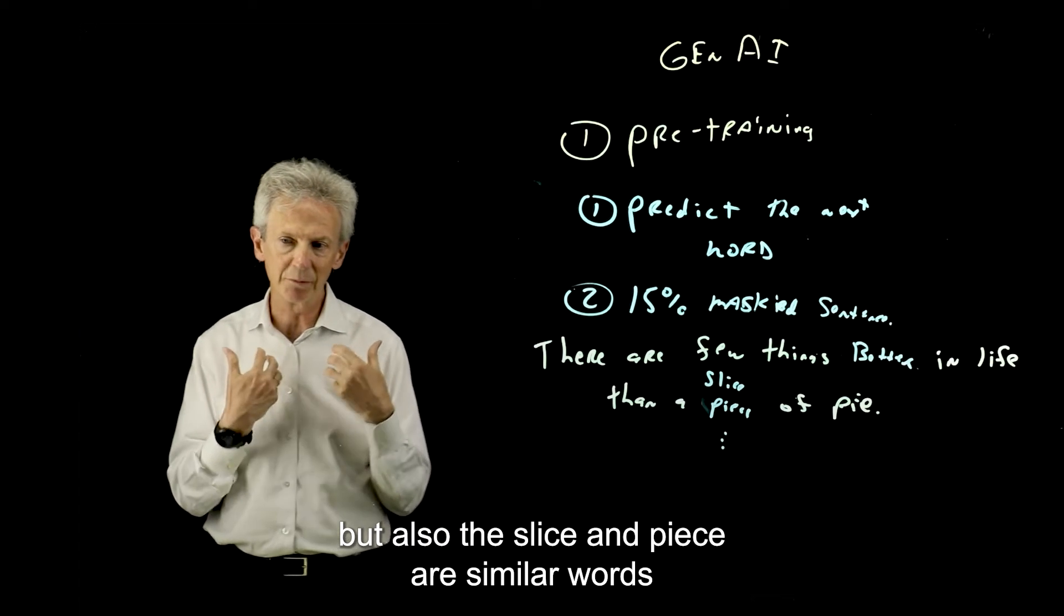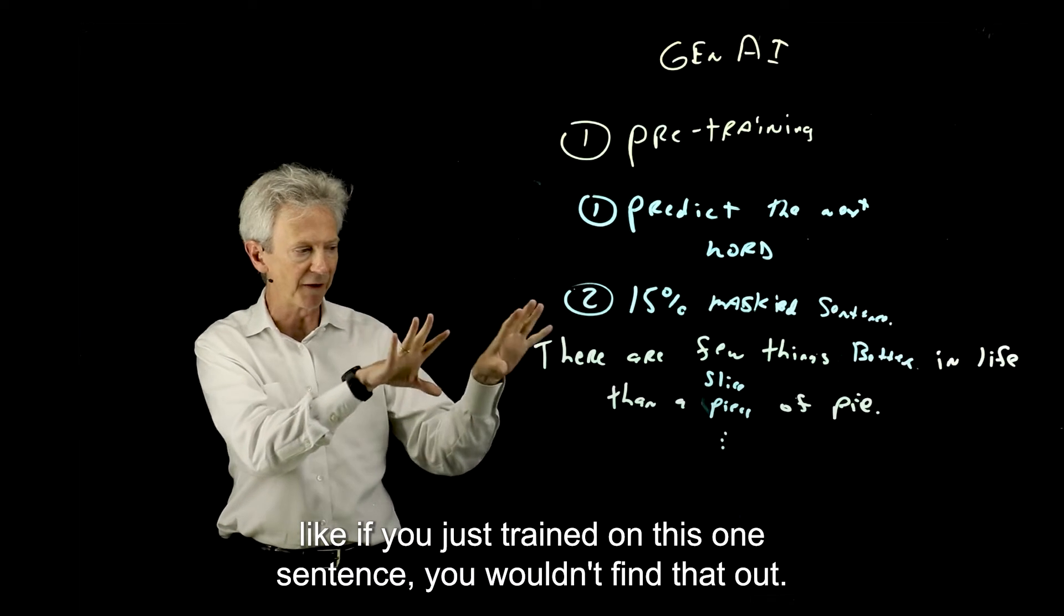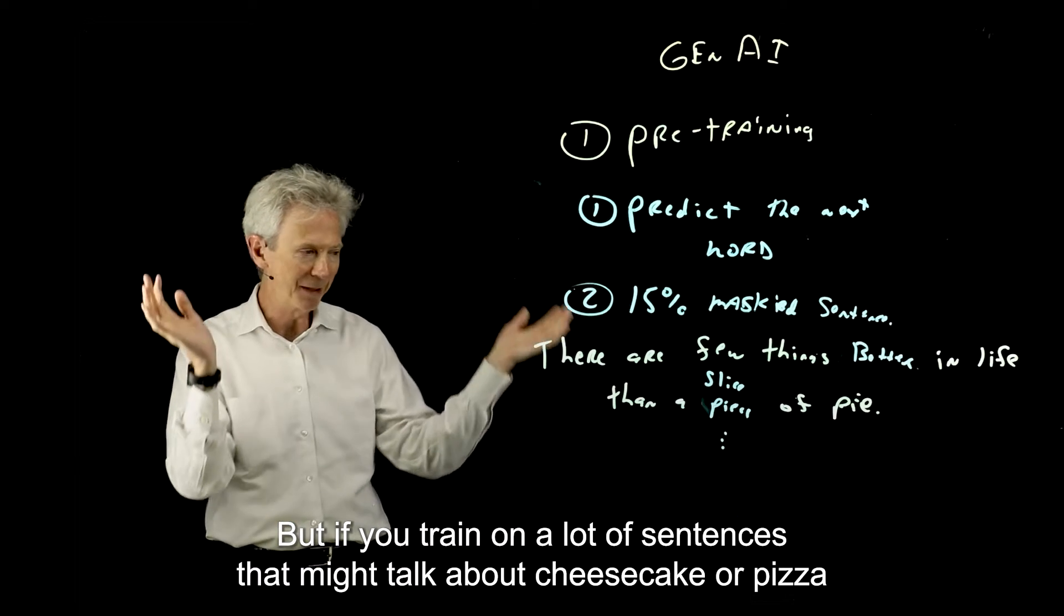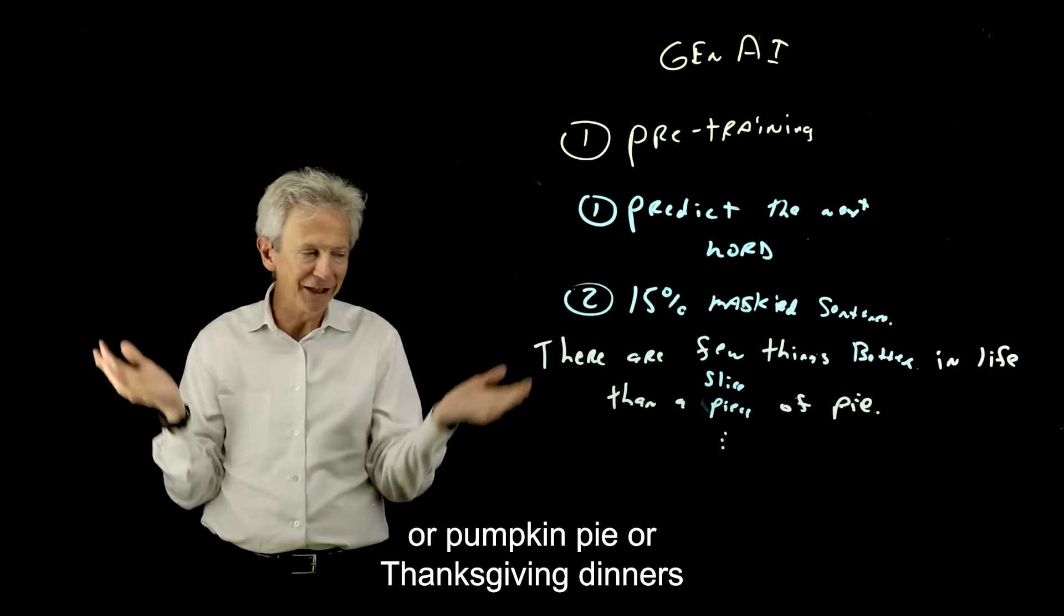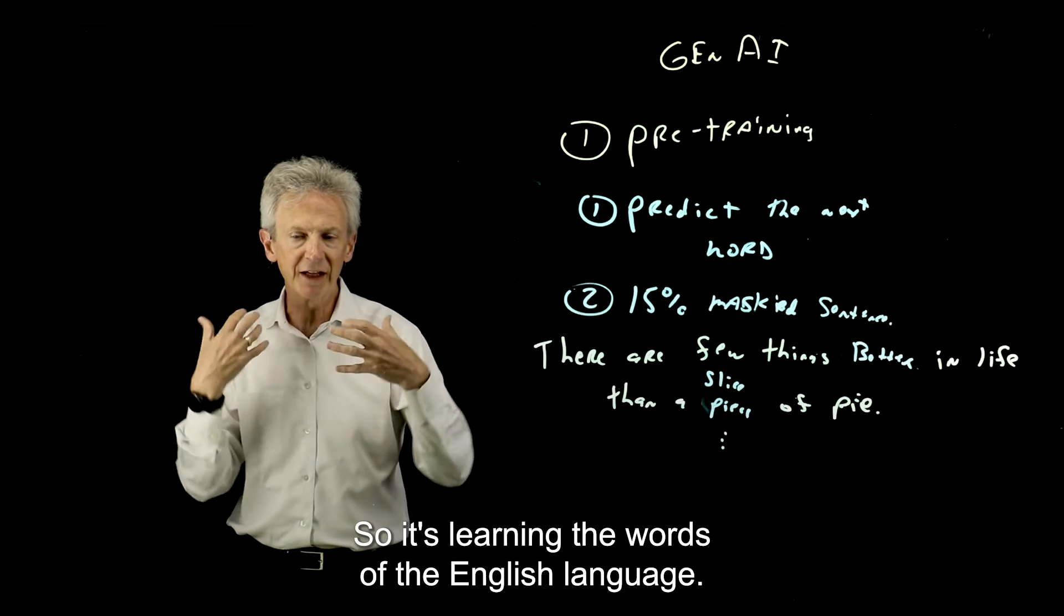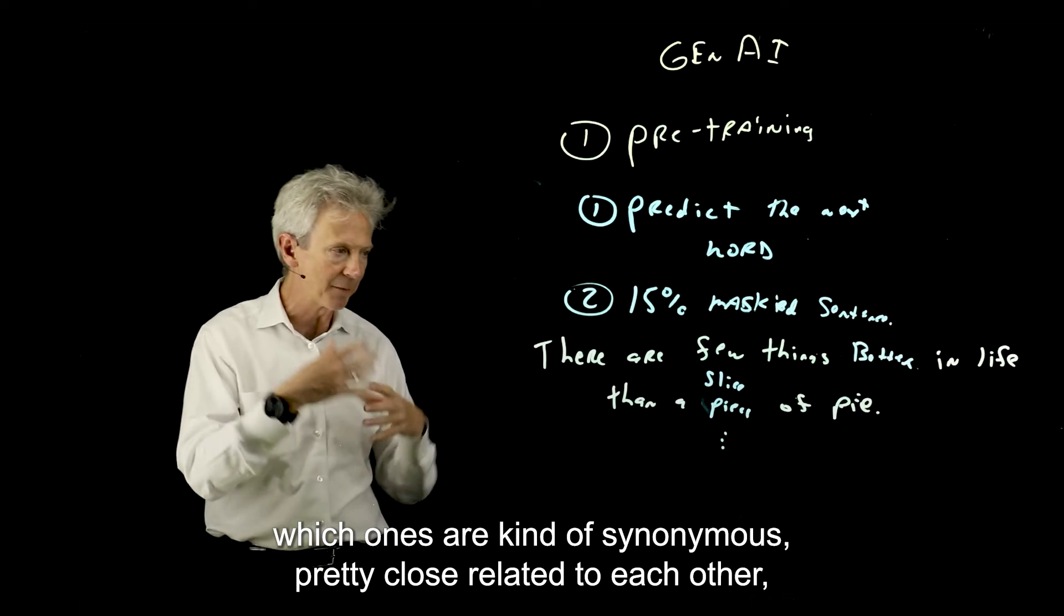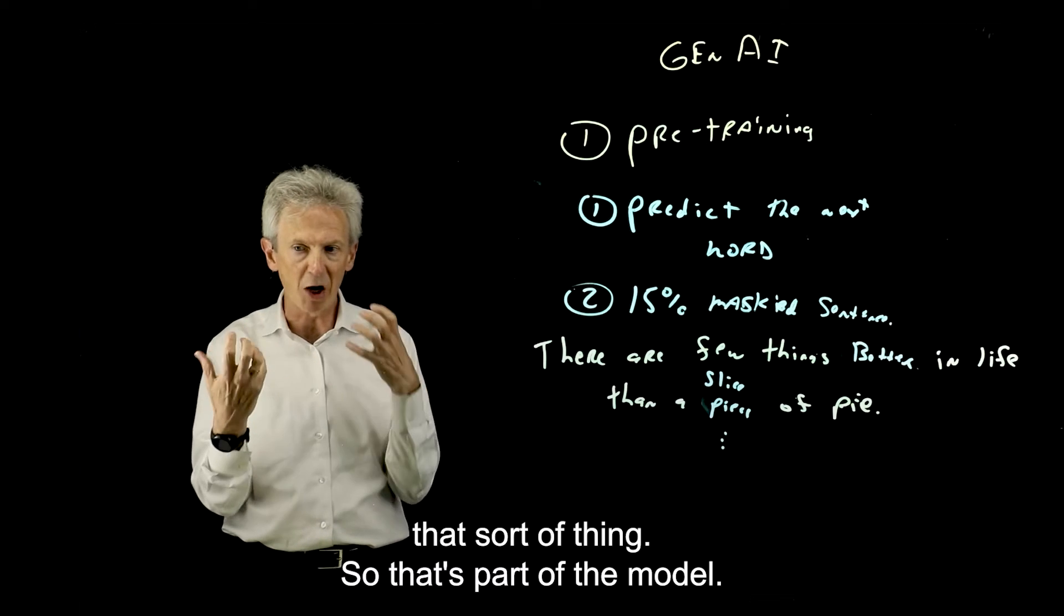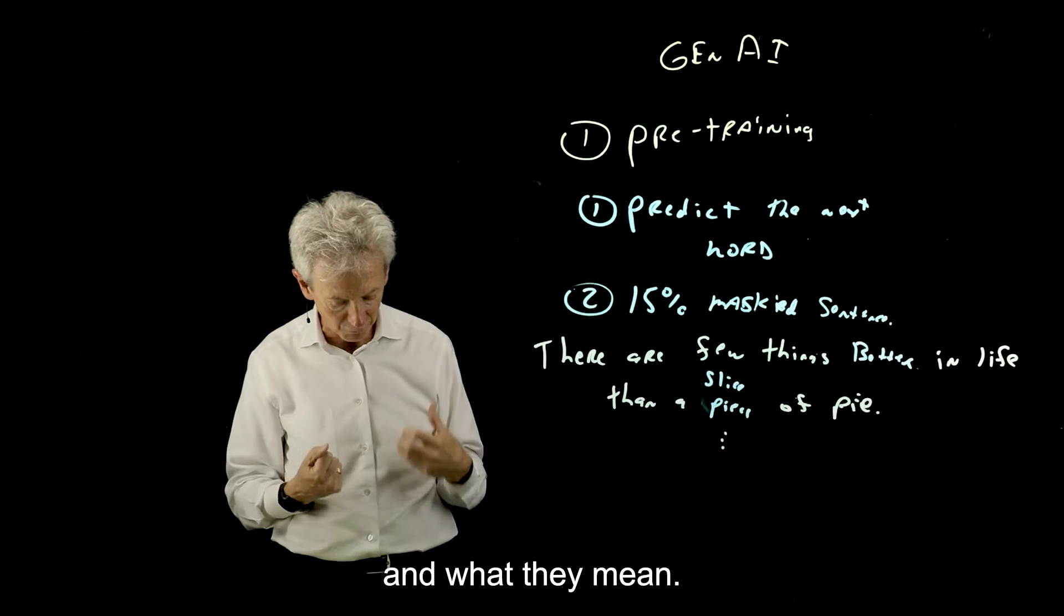What it's teaching the model is both related words like slice and piece go with the word pie. But also that slice and piece are similar words. Like if you just trained on this one sentence, you wouldn't find that out. But if you train on a lot of sentences that might talk about cheesecake or pizza or pumpkin pie or Thanksgiving dinners, it's going to see slice and piece used in similar contexts. So it's learning the words of the English language, which ones are kind of synonymous, pretty close, related to each other. That's part of what the large language model is learning - these relationships between words and what they mean.